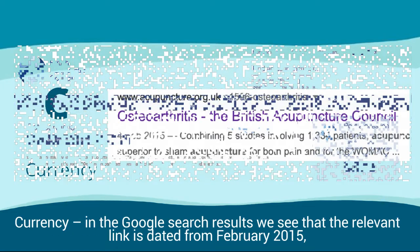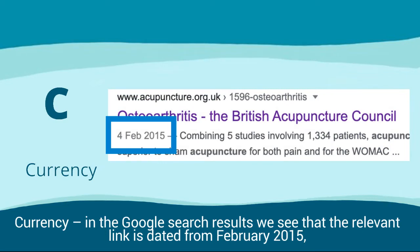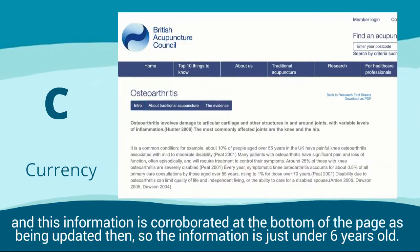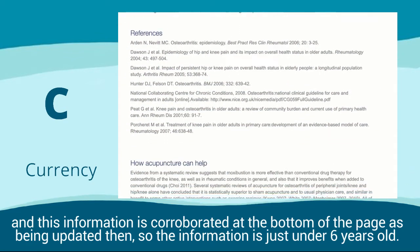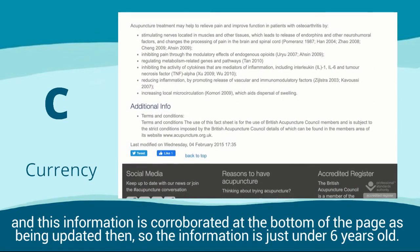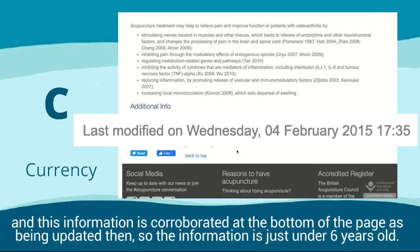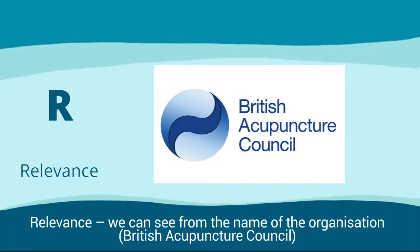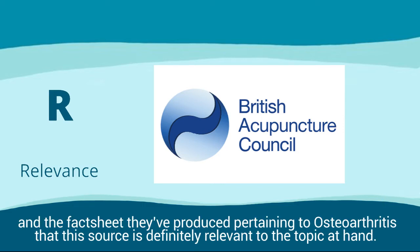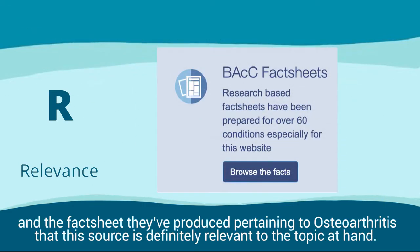Currency: in the Google search results, we see that the relevant link is dated from February 2015, and this information is corroborated at the bottom of the page as being updated then, so the information is just under six years old. Relevance: we can see from the name of the organisation, British Acupuncture Council, and the fact sheet they've provided pertaining to osteoarthritis, that this source is definitely relevant to the topic at hand.